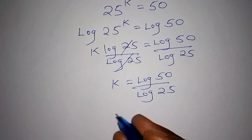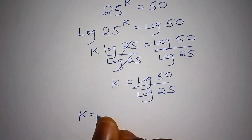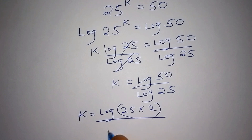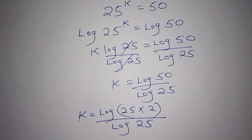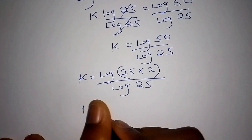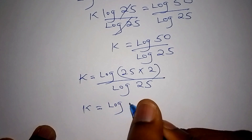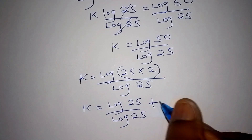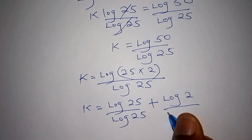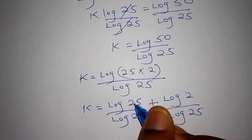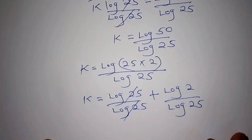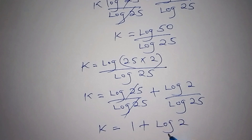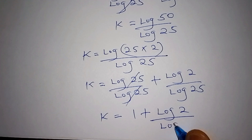So k equals log 50, and we can rewrite log 50 as the log of 25 multiplied by 2, all over log 25. We separate this and say: log 25 over log 25, plus log 2 over log 25. The log 25 and log 25 cancel, so we remain with k equals 1 plus log 2 all over log 25.